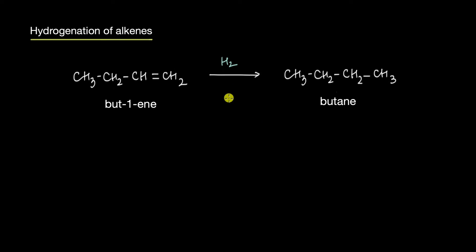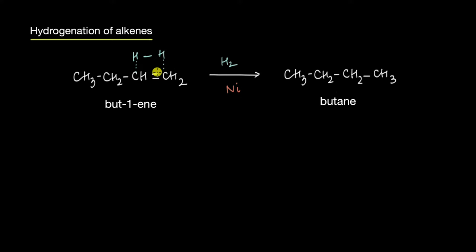Whenever we add hydrogen to an alkene like but-1-ene, we get an alkane — in this case butane. This reaction is actually very slow and we need to add a catalyst like finely divided nickel to drive up the rate. What happens is that hydrogen molecules collide against the double bond, leading to the formation of new carbon-hydrogen bonds along with the breaking of the carbon-carbon pi bond and the hydrogen-hydrogen bonds. This leads to the formation of an alkane. Hydrogenation of alkenes is always exothermic.